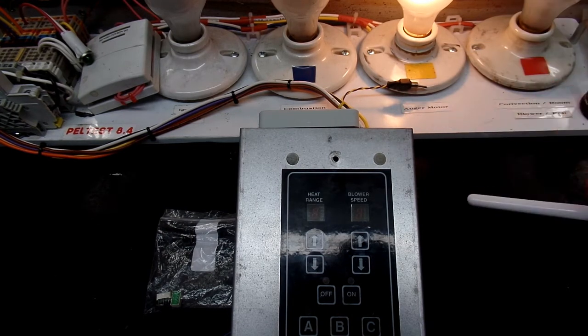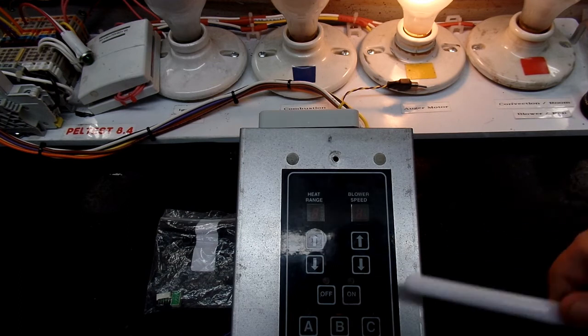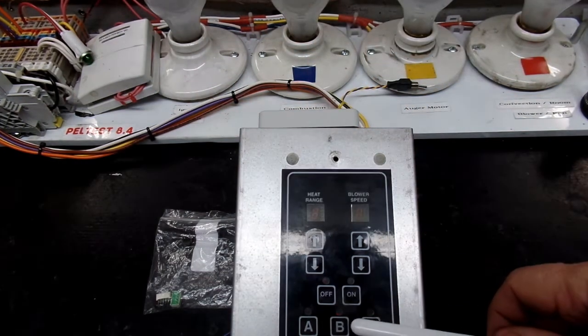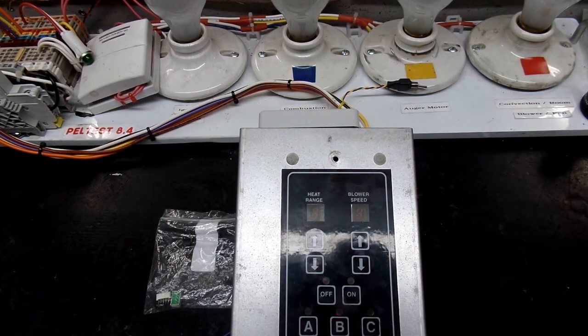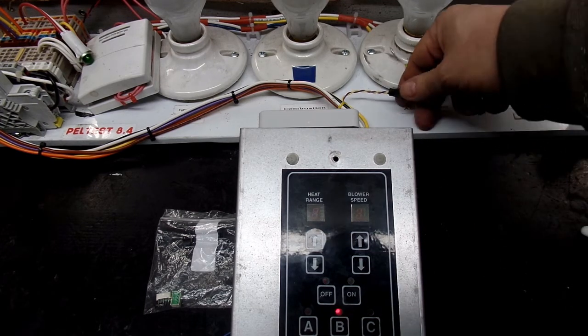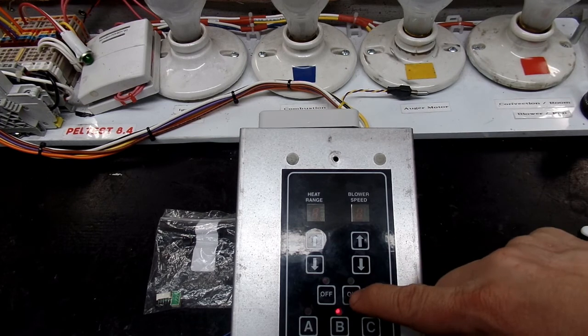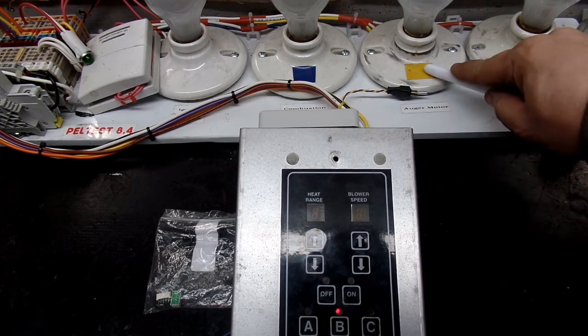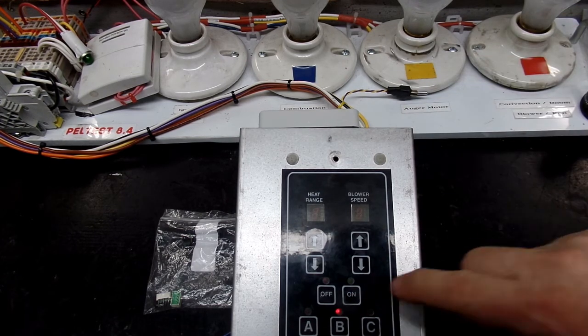When the auger called, we went off and we see down here the little light above the number three is blinking. That, straight out of the manual, is telling us that we had an over temperature issue. So I'm going to remove that over temperature and I'm going to turn it on again and when the auger comes on, that will clear the fault.